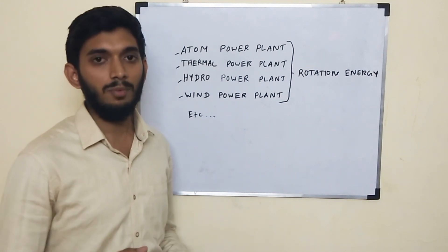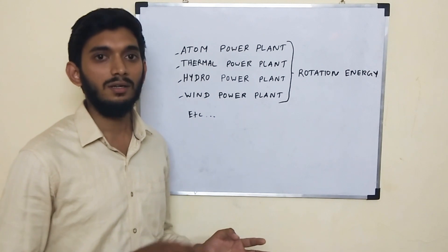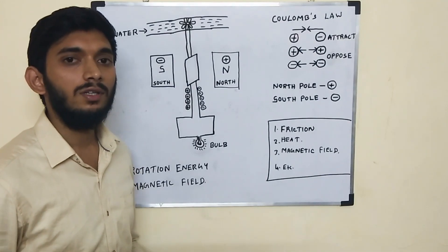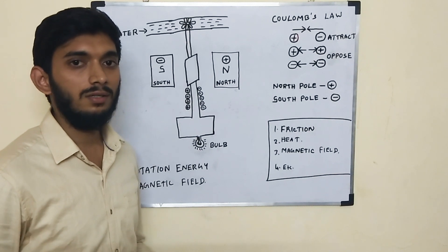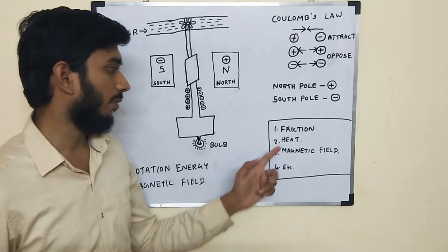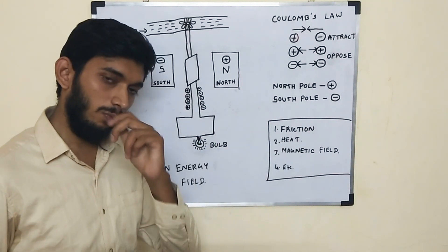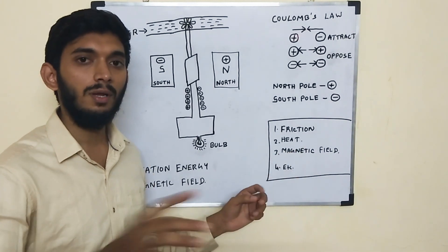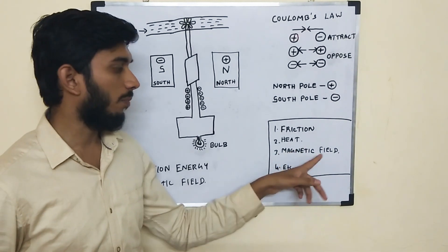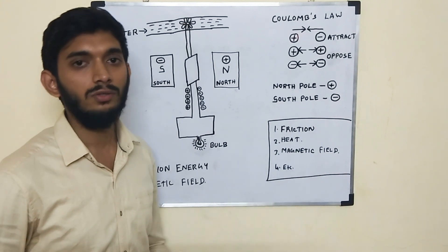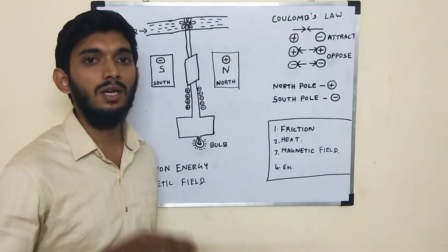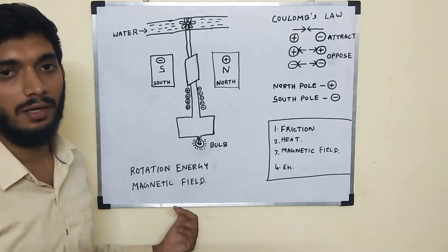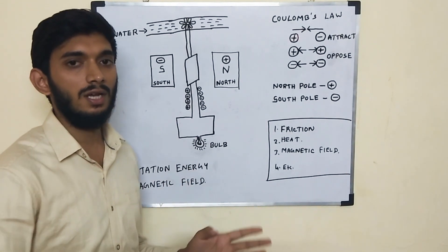When we generate rotation energy, we will see how the electrons move. We are going to move the electrons in multiple ways. Let's look at some examples: friction, we can move the electrons; then we can use heat; then we can move a magnetic field — in this magnetic field we will produce the electricity. That is rotation energy plus magnetic field, and if we combine these two, we have electricity.